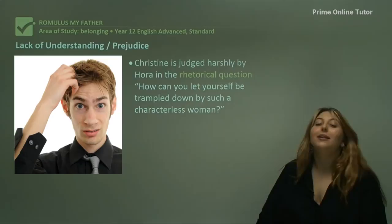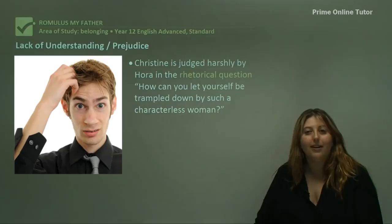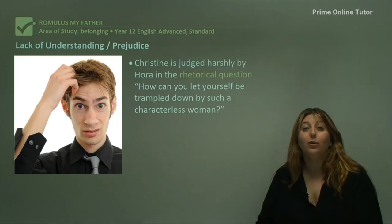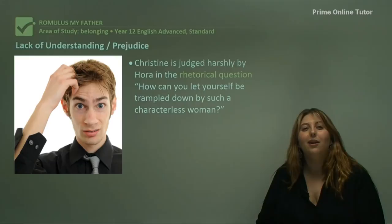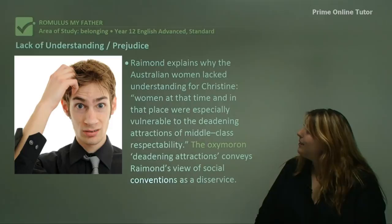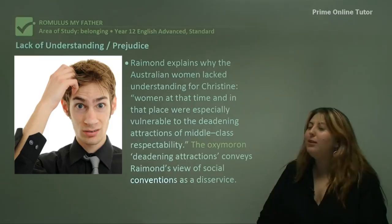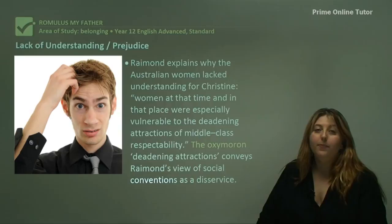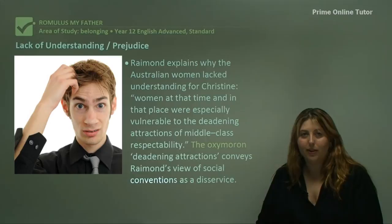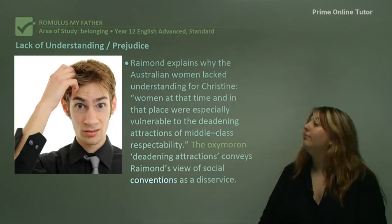Christine is judged harshly by Hora in the rhetorical question: 'How can you let yourself be trampled by such a characterless woman?' When you think about their personal values and the idea that character is the most important thing a person can live up to, calling someone 'characterless' is the biggest insult you could possibly give them. This shows they haven't tried to understand why Christine acts the way she does — they're dismissing her and making assumptions about how women ought to behave. Raymond explains why Australian women lacked understanding for Christine: 'Women at that time and in that place were especially vulnerable to the deadening attractions of middle-class respectability.' The oxymoron 'deadening attractions' conveys Raymond's view of social conventions as a disservice, saying cultural attitudes of the time didn't help individuals come to understand or accept one another.